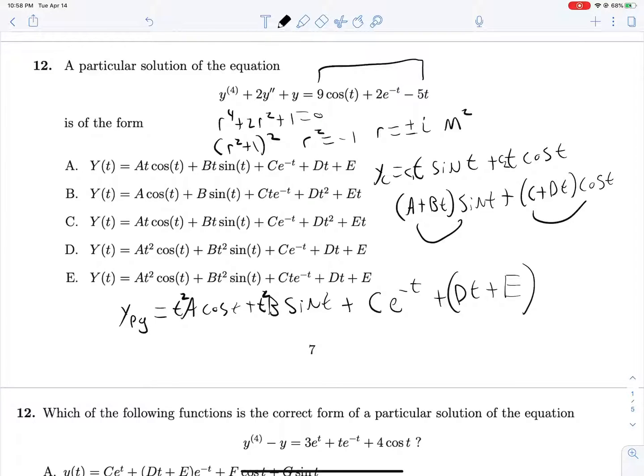And I'm really, really sorry that I don't have a better explanation for this. But essentially, if you run into this sort of situation, the rule seems to be multiply by T until the power of T on your sines and cosines is one greater than the power of T multiplied by your sines and cosines in YC. So that leads us to answer D.